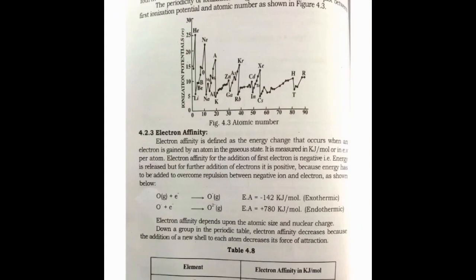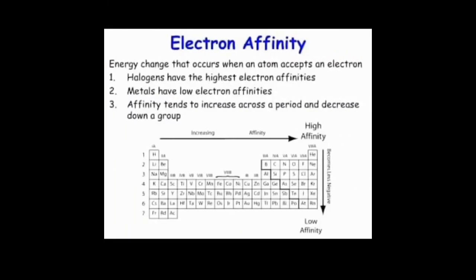Now the electron affinity. What do you mean by electron affinity? Energy change that occurs when an atom accepts an electron. Halogens have the highest electron affinity. Metals have low electron affinity. Affinity tends to increase across a period and decrease down a group.